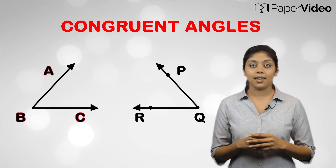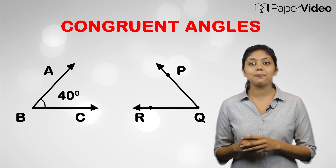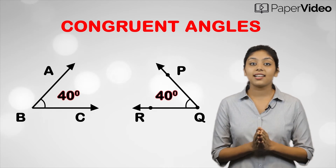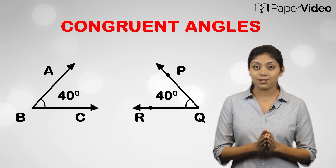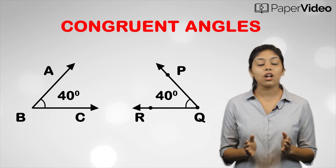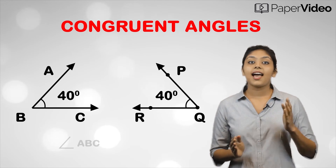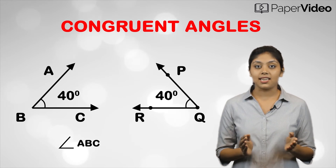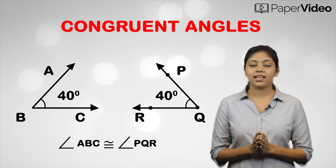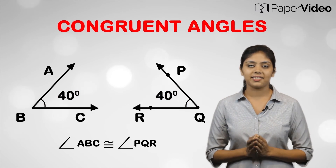If we have angle ABC of measure 40 degrees and angle PQR of measure 40 degrees, then both angles have the same measure. So we can say that angle ABC is congruent to angle PQR, written as angle ABC congruent to angle PQR. If the measures of two angles are equal, then the angles are called congruent angles.